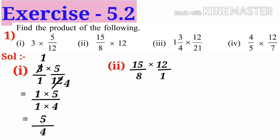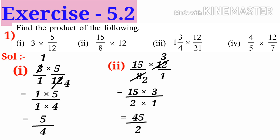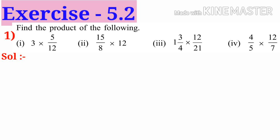By simplification, divide by 4: 2 and 3. We get 15 × 3 in the numerator, 2 × 1 in the denominator, that is 45/2 is the answer. Now third problem: 1 and 3/4 × 12/21.